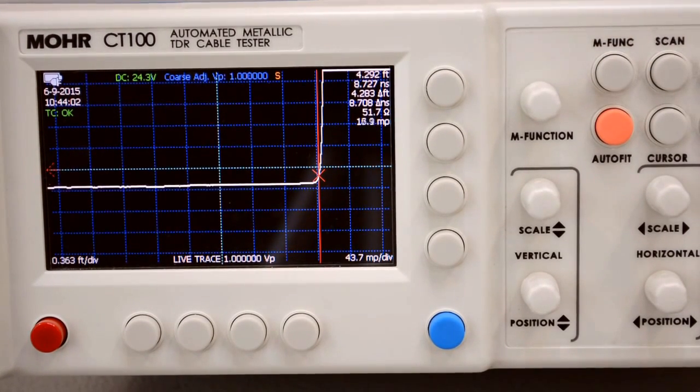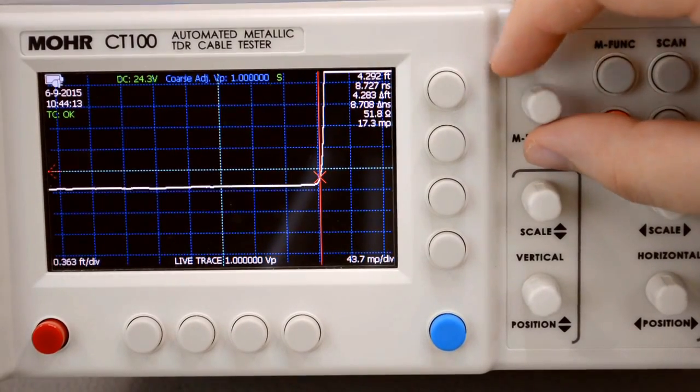Our expected V sub P is around 0.7 which is what usually this cable type has. So if we get close to our expected V sub P then we're going to be in good shape.